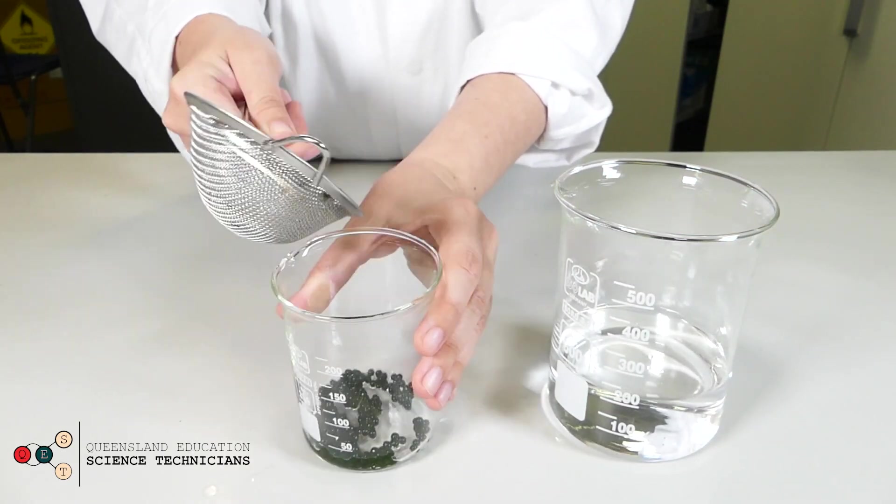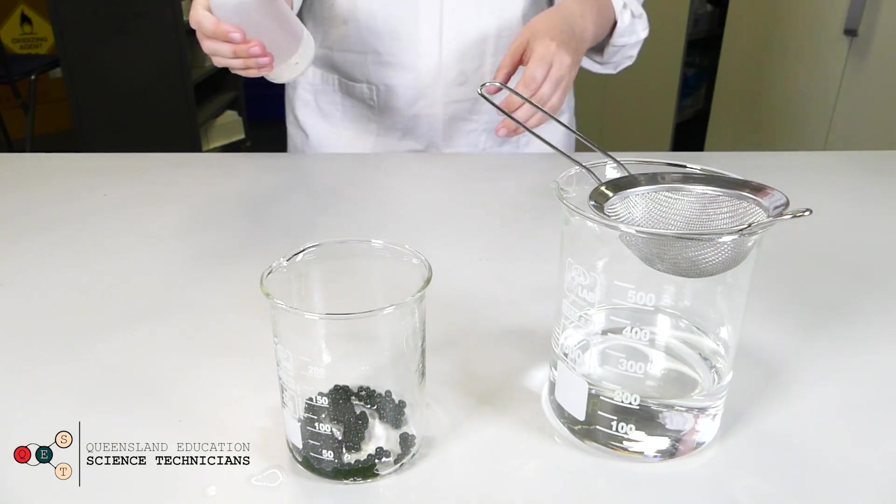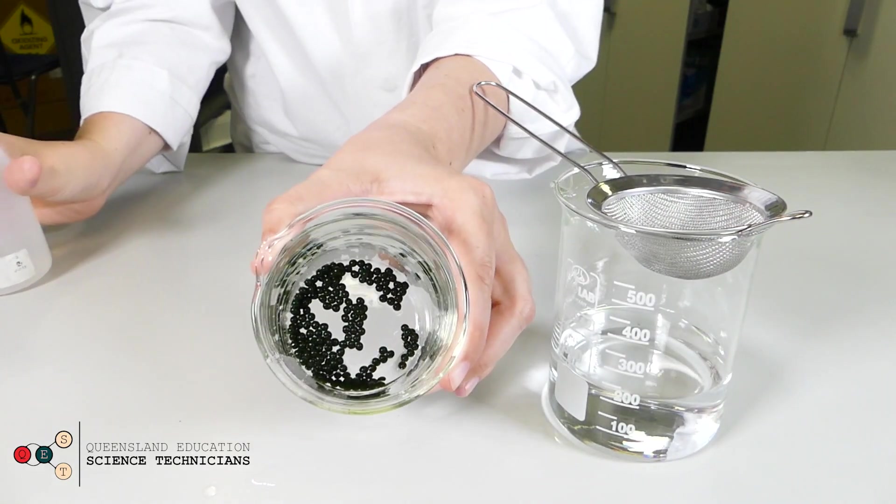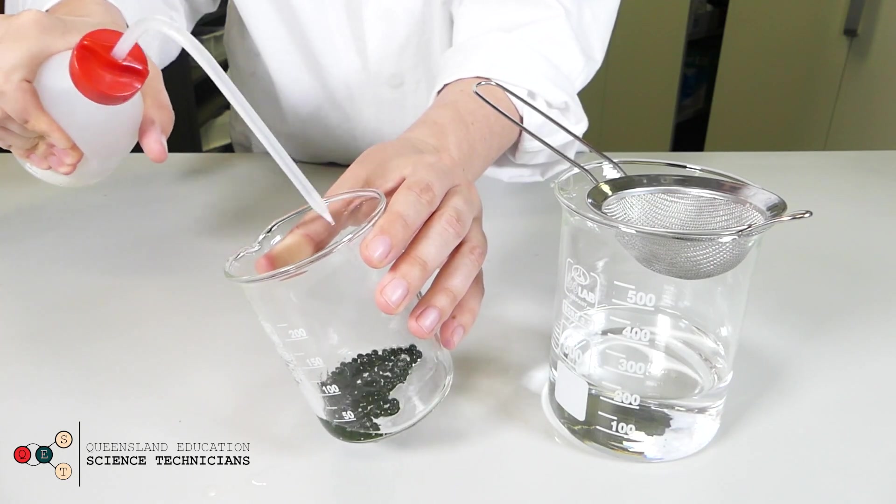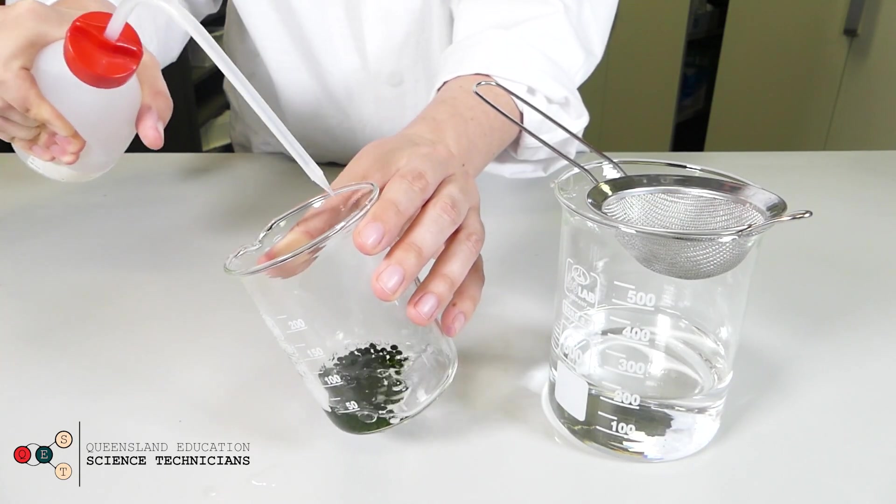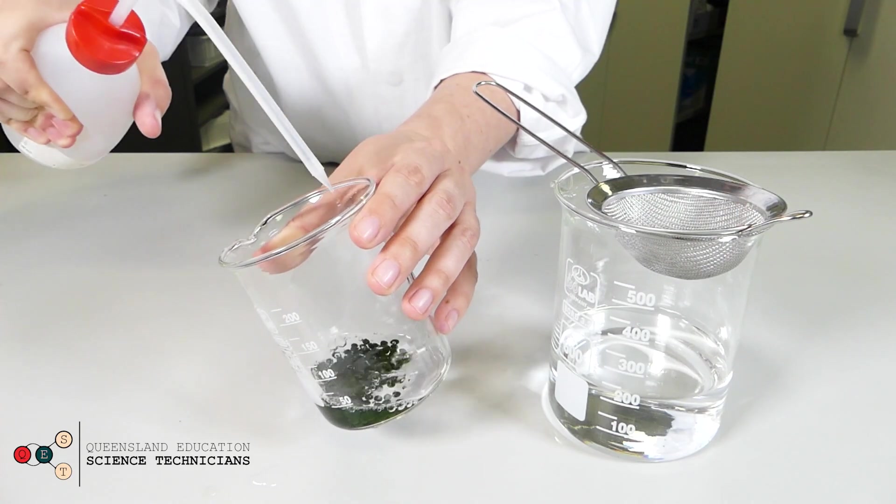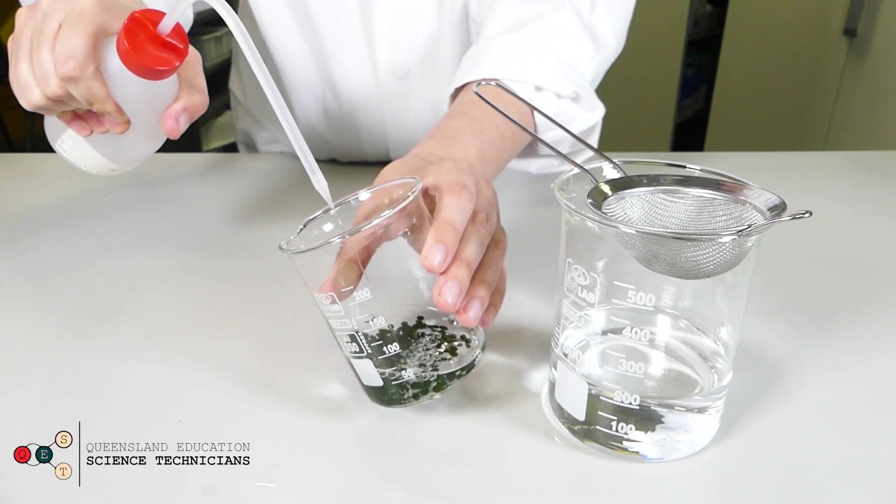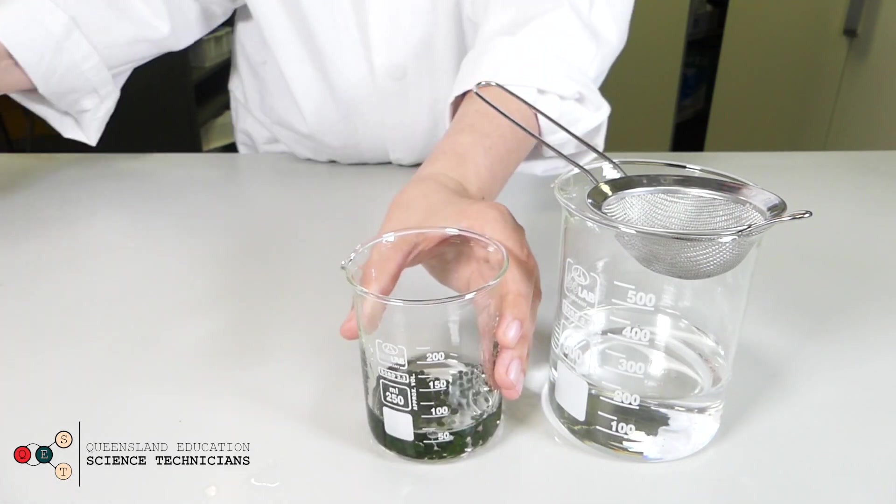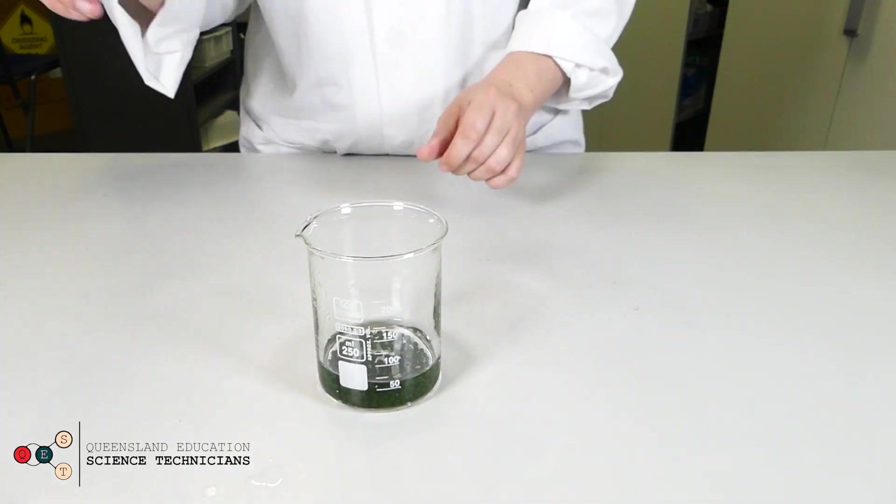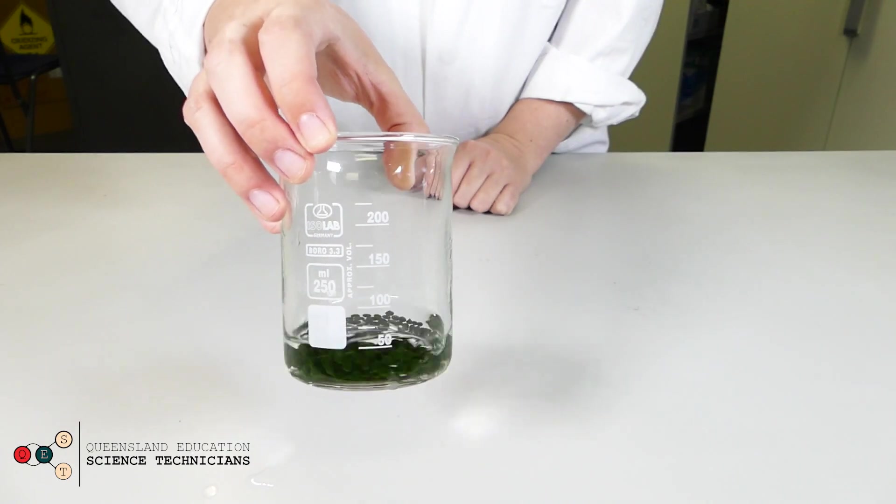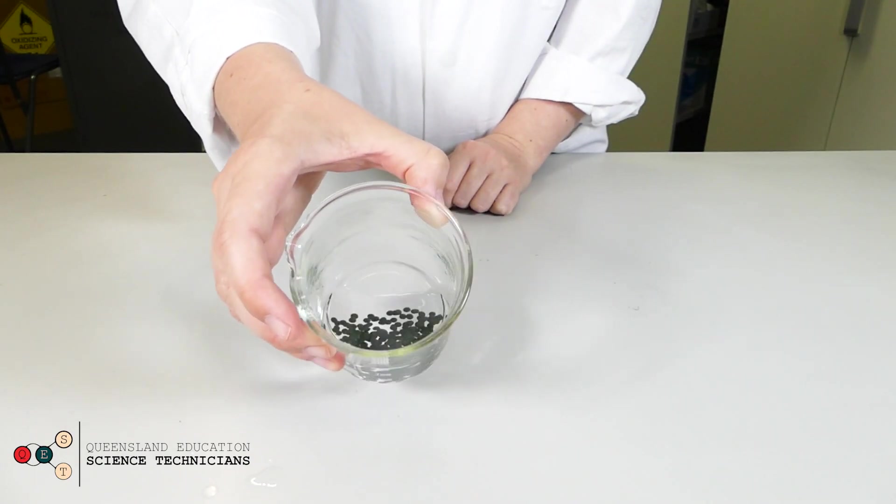And just pour them into a nice clean 250 mil beaker. Add some more distilled water. And if you cover this beaker in glad wrap these will stay fine in the fridge at about 4 degrees for a few weeks until you're ready to use them with your class.